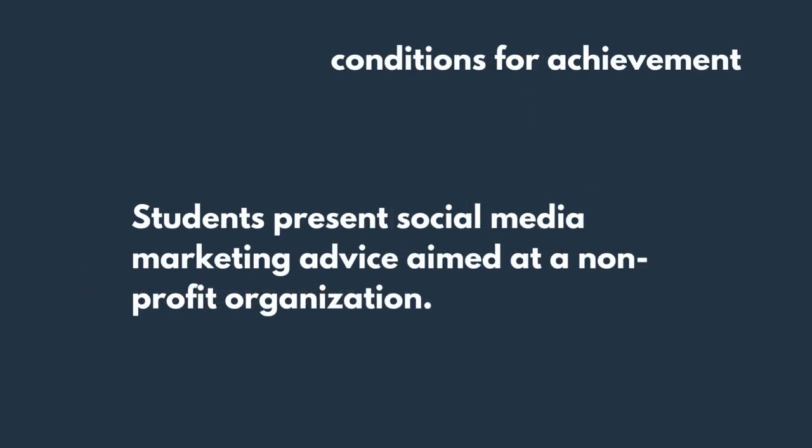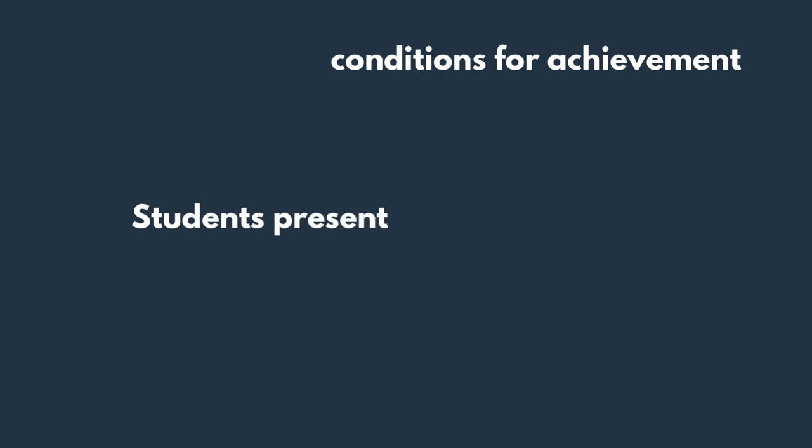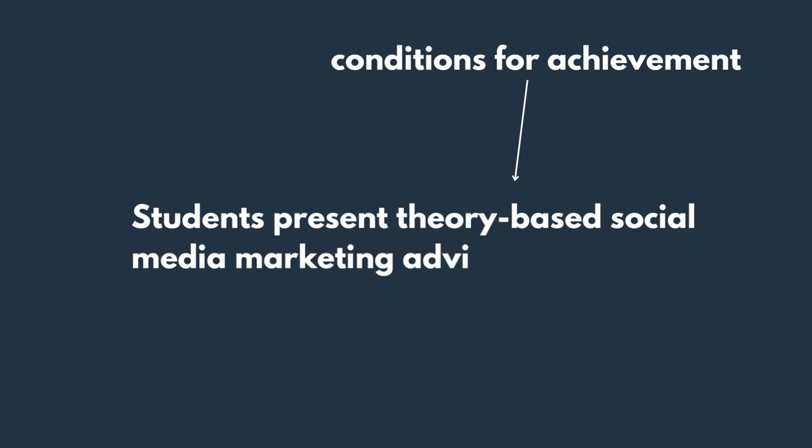Then think about adding conditions for achievement. You might want the presentation to be professional, effective, or based on theory. Your conditions are important because students achieve the outcome not just by doing what is required, but by doing it in a certain way. Not any presentation will do — it needs to be professional and the content needs to be theory-based. For example: students present theory-based social media marketing advice aimed at a non-profit organization in a professional manner.